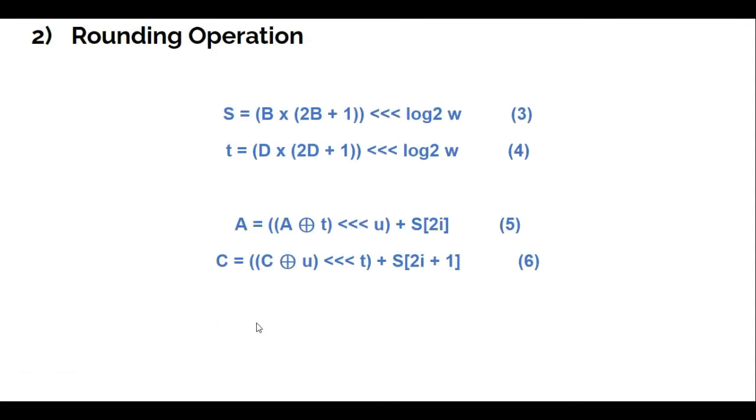The next step is rounding operation. Here we got four steps. T equals B times (2B plus 1), and the answer will be rotated to the left by least significant log to W. And T, D times (2D plus 1), the answer will be rotated to the left by log to W. And next is A equals, we use the operation exclusive or for A and T, and next the answer will be rotated to the left by least significant of U. And the answer will be plus by S2i. C, we use the same with step 5, C exclusive or U, and the answer will be rotated to the left by least significant of T, and the answer will be plus by the formula S(2i plus 1).